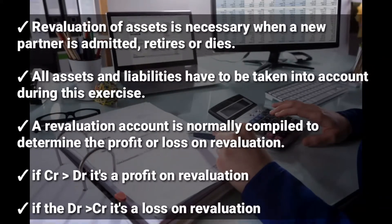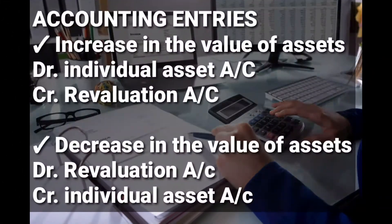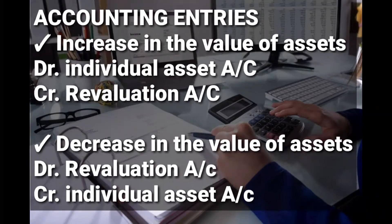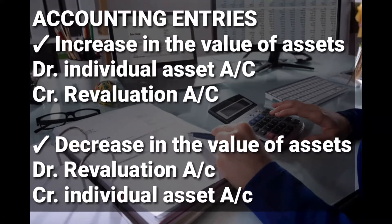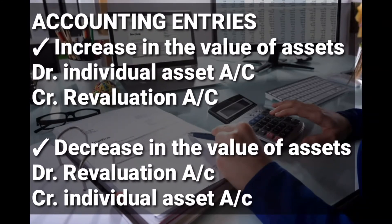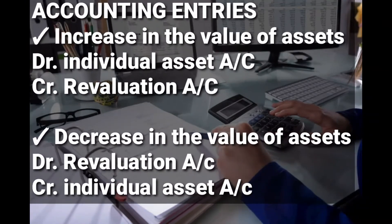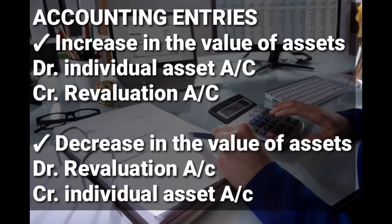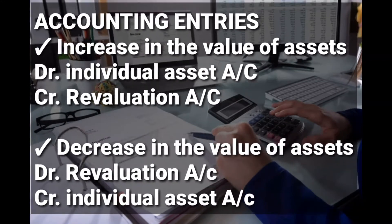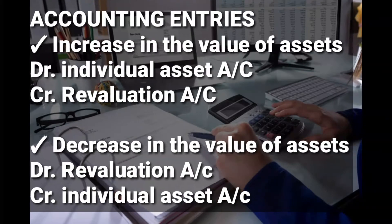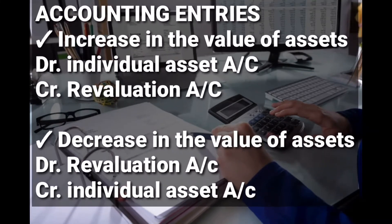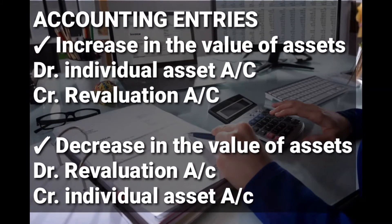Let's look at the accounting entries in case of revaluation. When revaluation occurs we prepare the revaluation account. In case there is an increase in the value of assets — assets increase by debiting and reduce by crediting — we debit the individual asset account and credit the revaluation account. In case there is a decrease in the value of assets, we debit the revaluation account and credit the individual asset account.